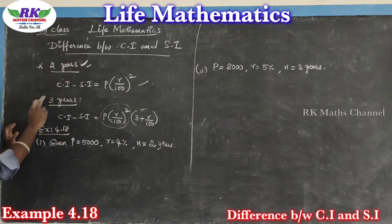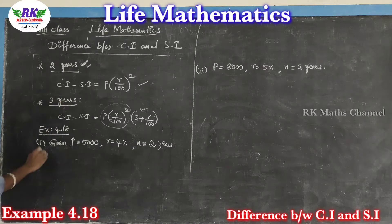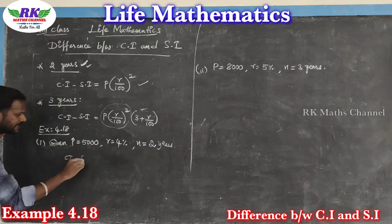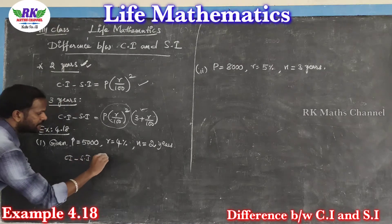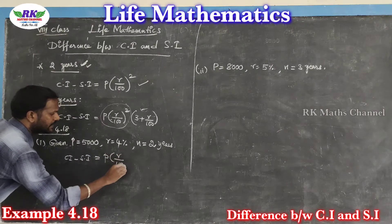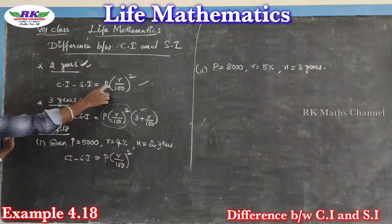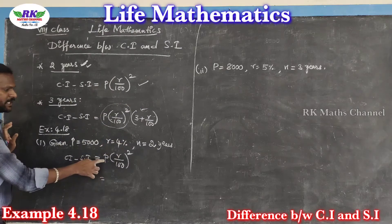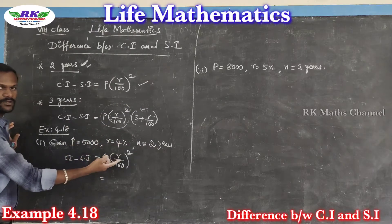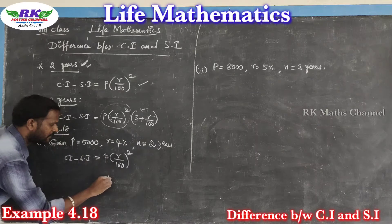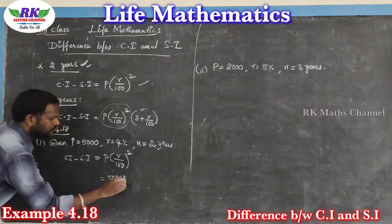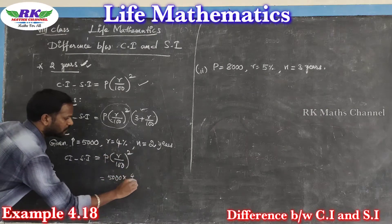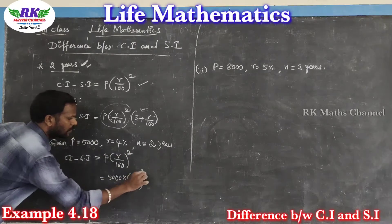The difference is between Simple Interest and Compound Interest. The difference is the formula. For example, 5000 into R by 100 — here R is 4 — so 4 by 100 whole square.